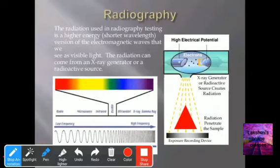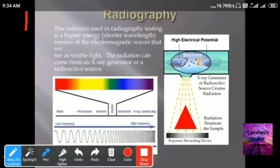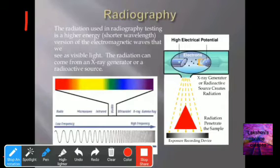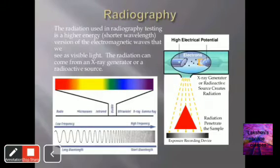Radiographic inspection of the weld uses X-ray and gamma ray testing to reveal defects such as porosity, blow holes, cracks, poor fusion, and slag inclusions. The radiation used in radiographic testing is a higher-energy, shorter-wavelength version of electromagnetic waves. The radiation can come from an X-ray generator or a radioactive source.